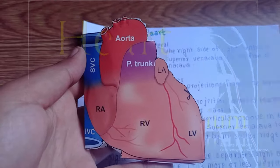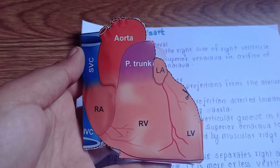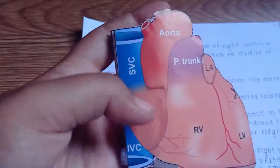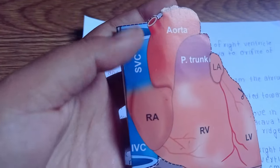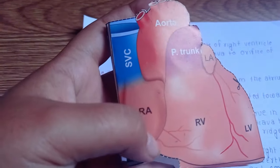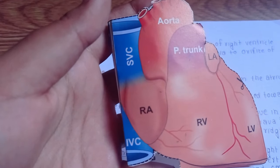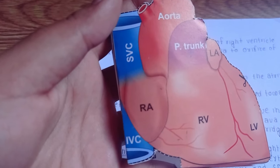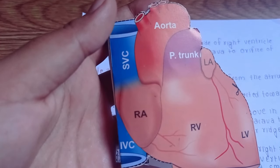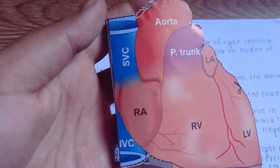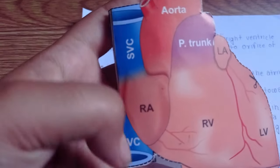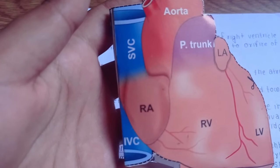Let's discuss the right atrium. It is quadrilateral in shape and lies behind the right side of the right ventricle. Regarding its extent, it extends from the orifice of the superior vena cava to the orifice of the inferior vena cava.